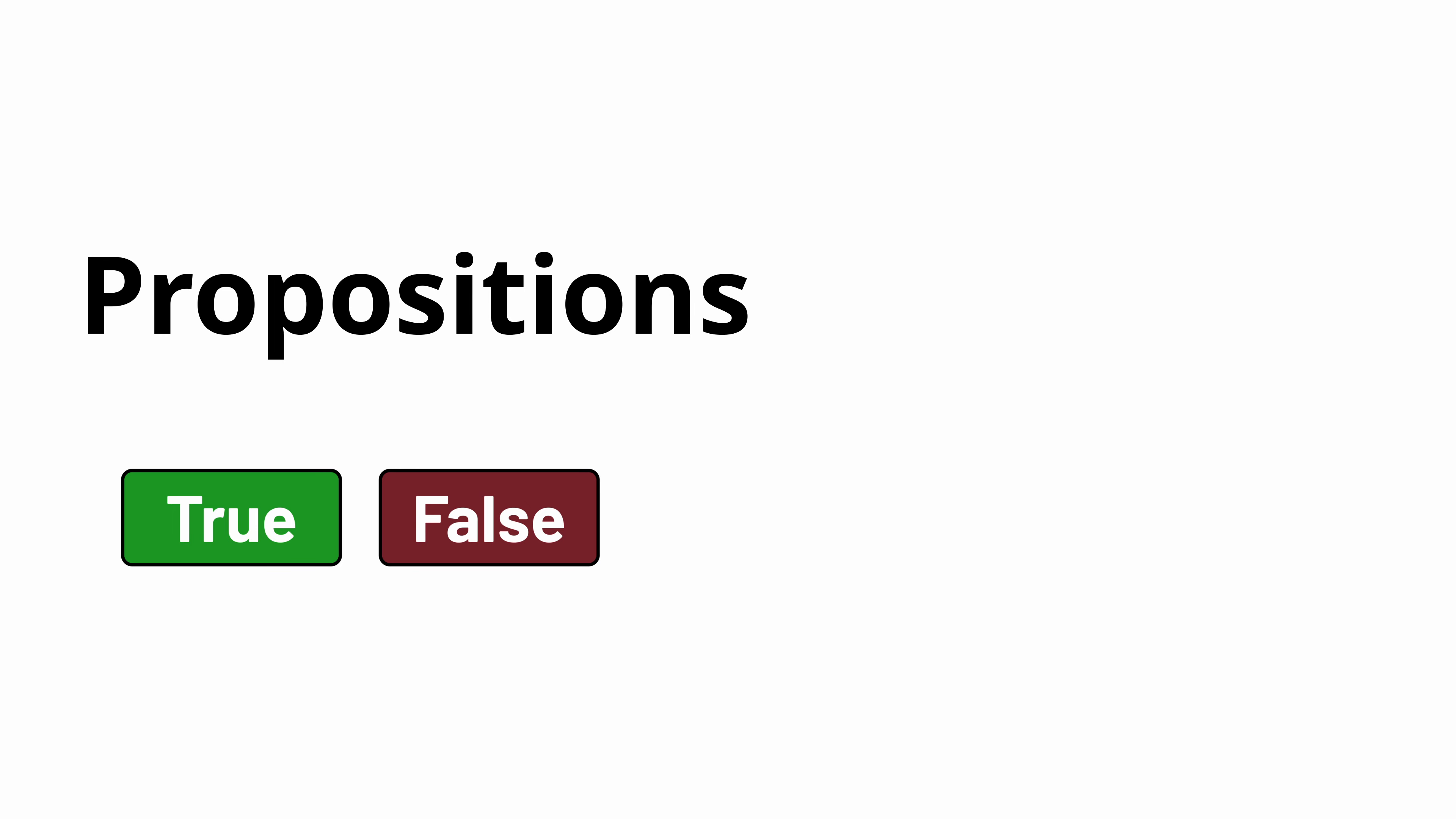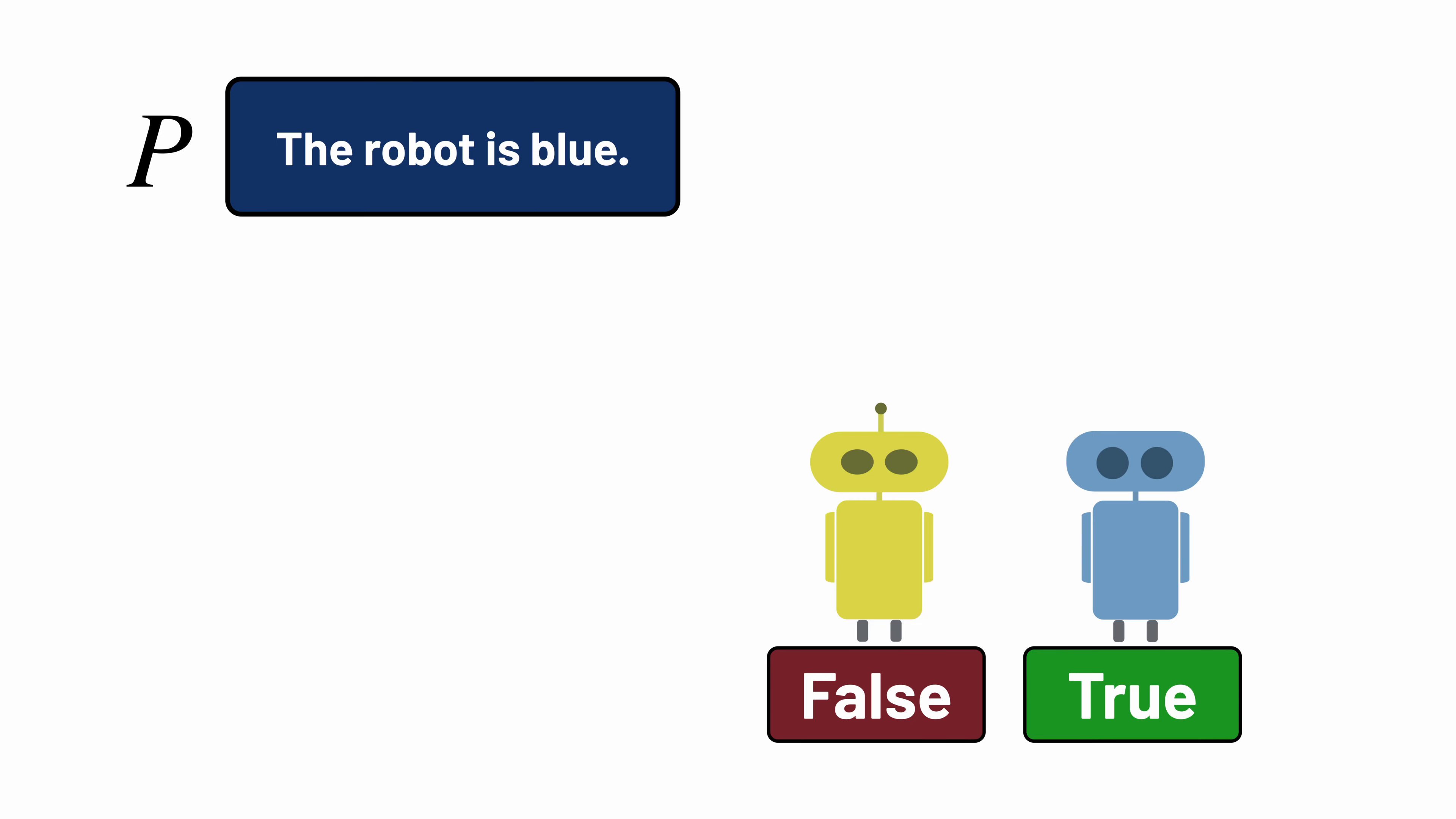For example, we might have a proposition like, 'the robot is blue.' To make it easier to talk about these propositions, we'll often use a variable, like the letter P, to stand for a proposition. Depending on the state of the world, the proposition might be true if the robot in question is blue, or the proposition might be false if the robot is some other color.